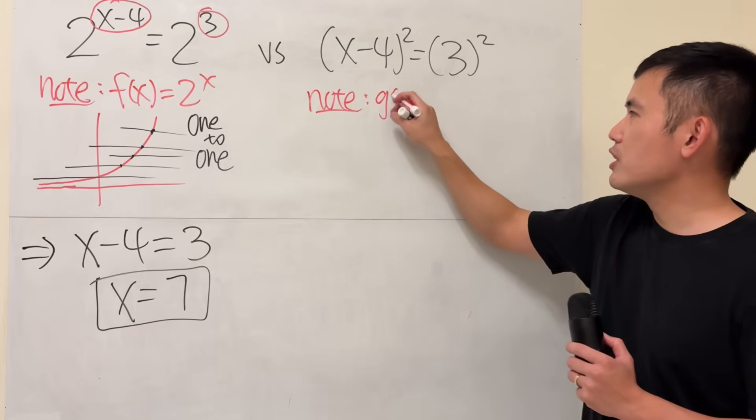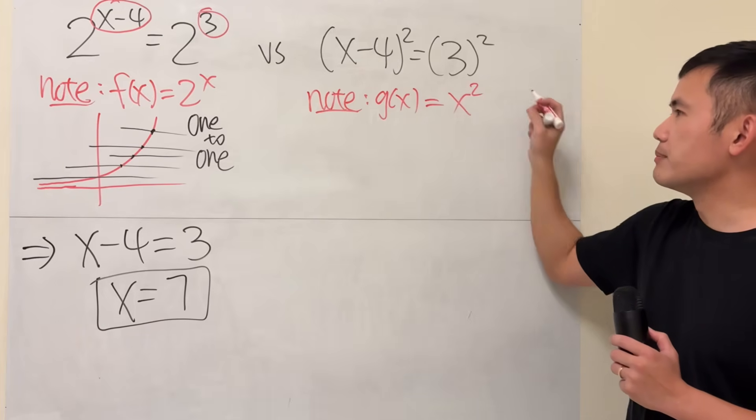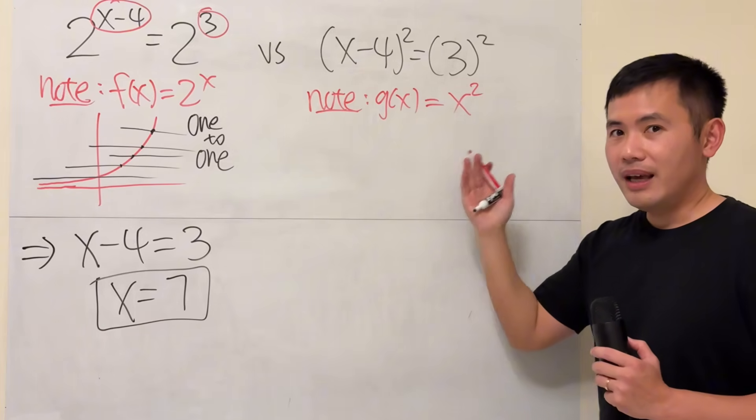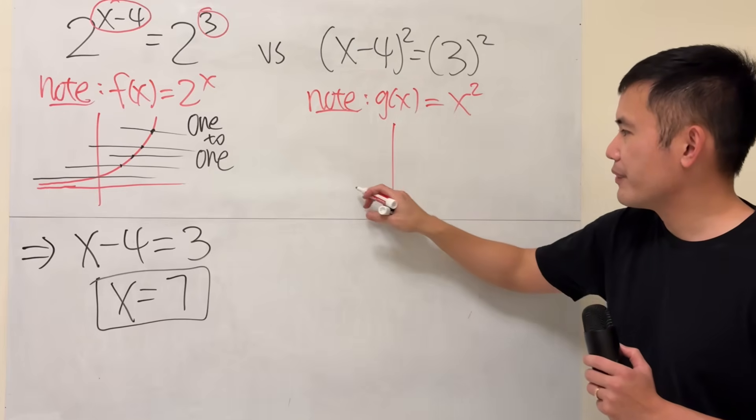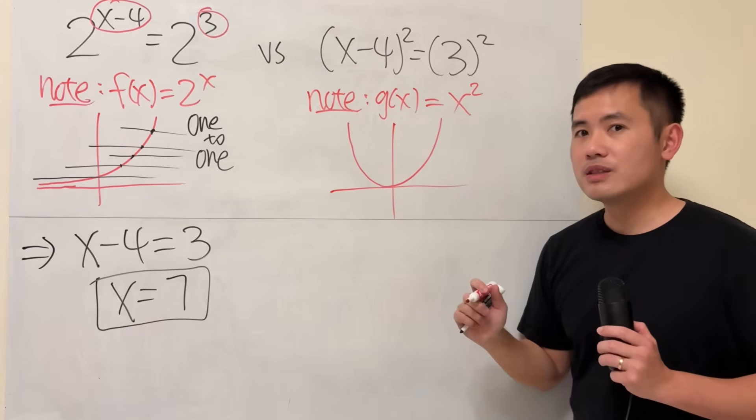So I'm just going to graph, let's say, g of x, because I used f over there already. x to the second power. For an x to the second power graph, it looks like this. Now, is this one-to-one?